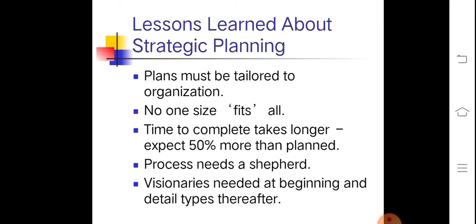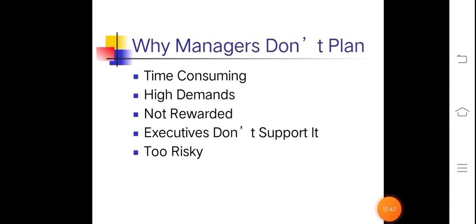What are the lessons learned about strategic planning? Plans must be tailored to the organization — there is no one-size-fits-all approach. Time to complete takes longer than expected, about 50 percent more than planned. The process needs visionaries at the beginning and detail-oriented types thereafter. In strategic planning, you need to set overall goals for your business and develop a plan to achieve them, identify your priorities, understand day-to-day operations, and ask where your business is headed.